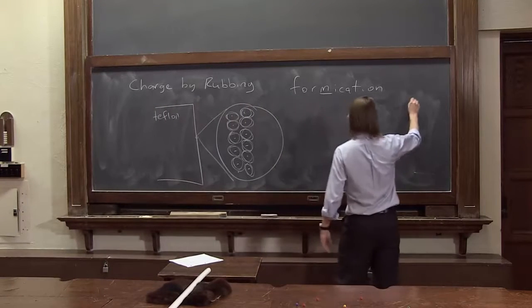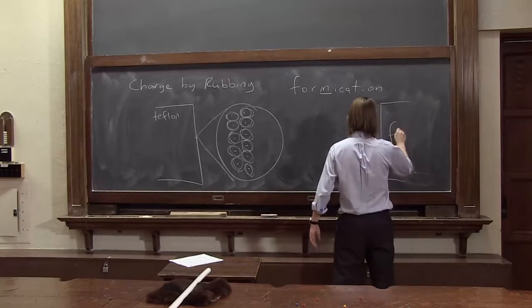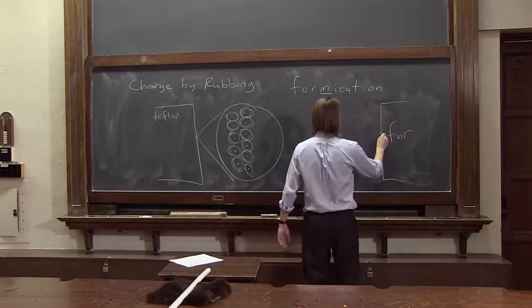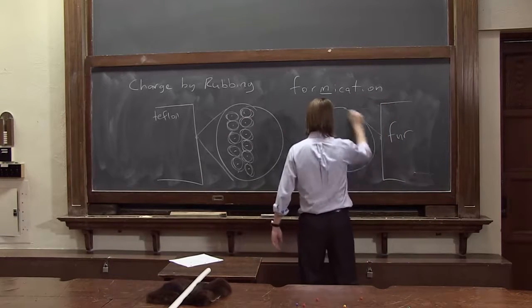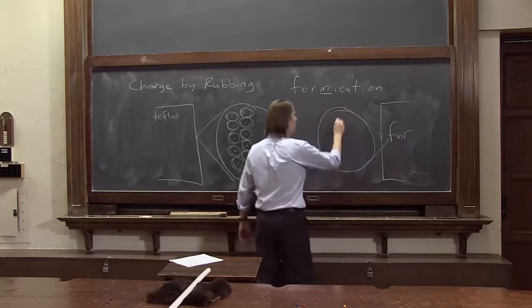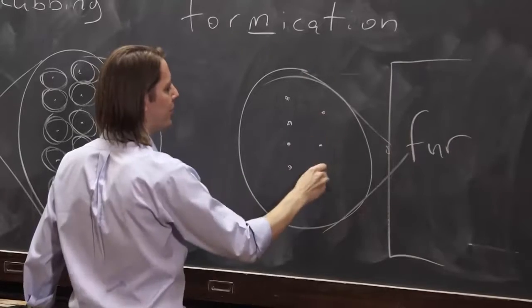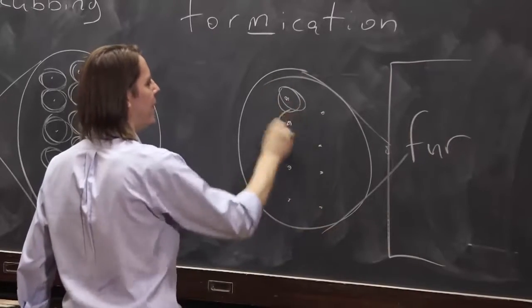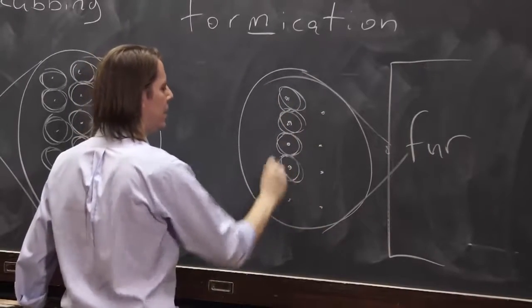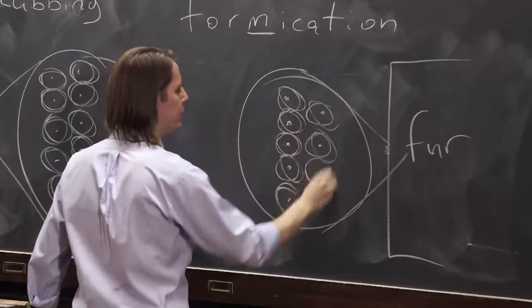And if we were to take the fur over here, same story. If we were to zoom in on the surface of the fur, really hard, there would be little fur atoms. I mean, they're not really fur atoms, but you know what I mean. And they would have positive nuclei, negative electrons going around. Everything is neutral.